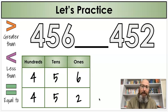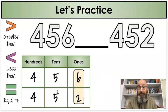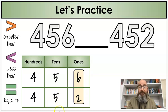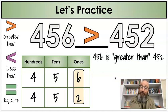What's the next step? What numbers do I compare first? The hundreds. That's right. Both those numbers are the same, 400 and 400, so I go to the tens place. Are 50 and 50 the same? They are. I go to the ones place. Are these numbers the same? No. Six is greater than two. Six is greater than two. So I'm going to use the greater than symbol. In my sentence, 456 is greater than 452.